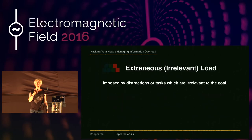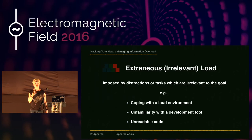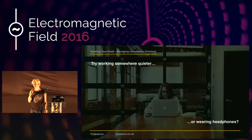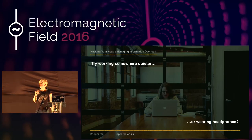Extraneous or irrelevant load is imposed by distractions or tasks that are irrelevant to the goal. These could be noise distractions, needing to learn an unfamiliar tool or set of tools, or trying to decipher code that's unreadable or difficult to follow. To manage extraneous load, we could try working in a quieter environment, wearing headphones, or reducing the number of tools or libraries we use to a minimum.